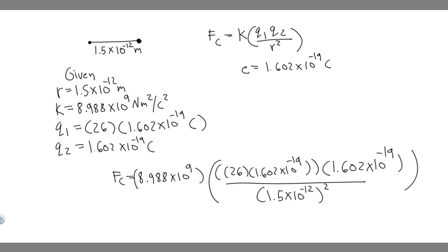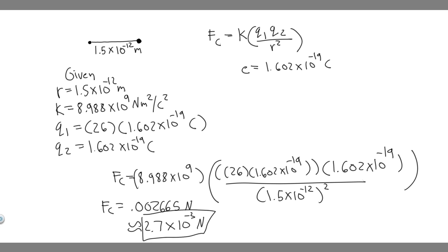When you go ahead and plug this in, you're going to get F sub c equal to 0.002665 newtons. Moving the decimal point 3 places, this is going to be about 2.7 times 10 to the minus 3 newtons — that's the electric force of attraction between the nucleus and its innermost electron. So this is going to be your answer, and hopefully you found this useful.